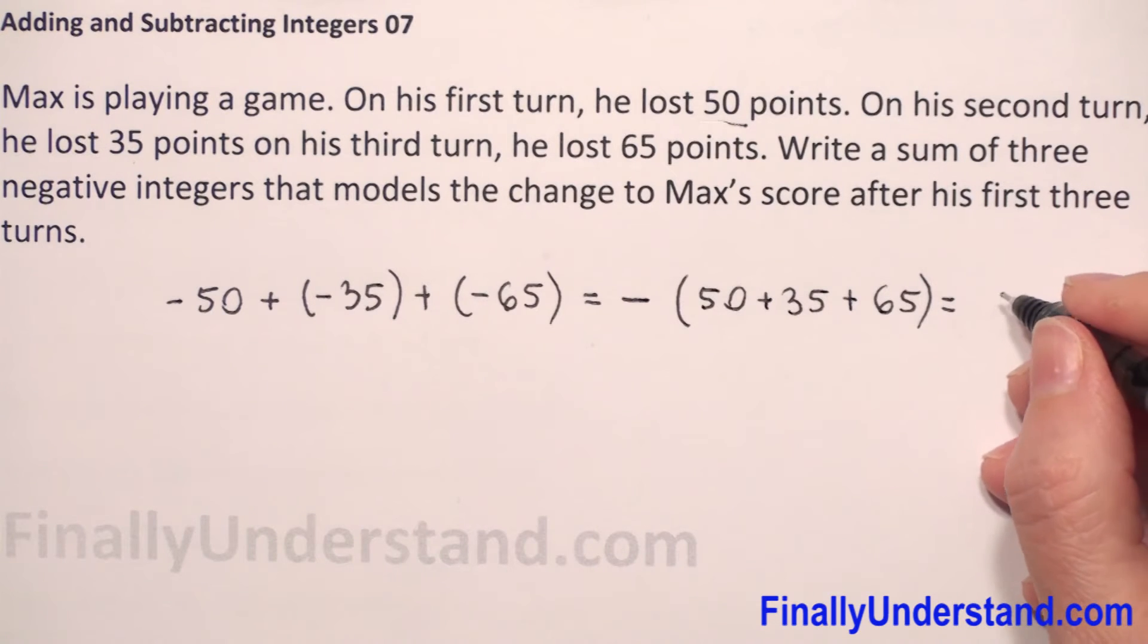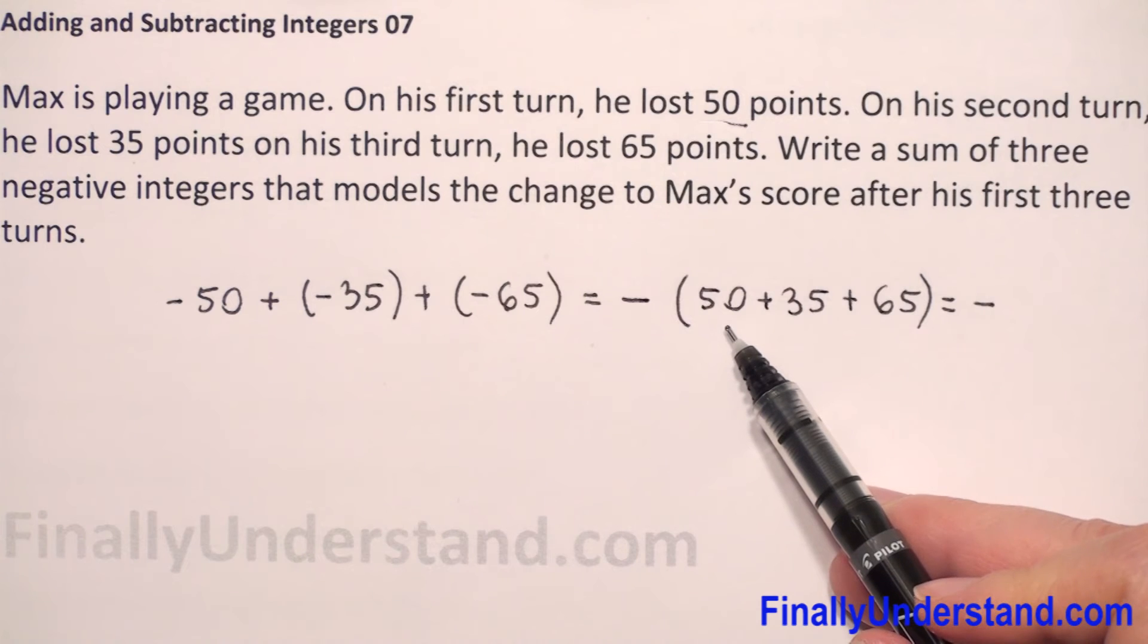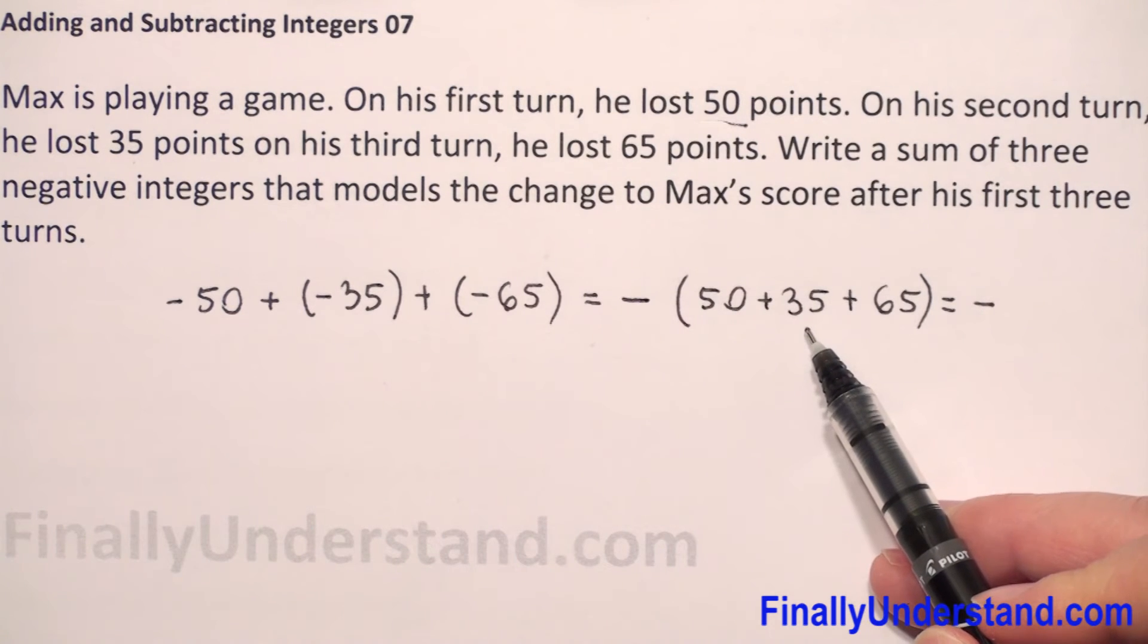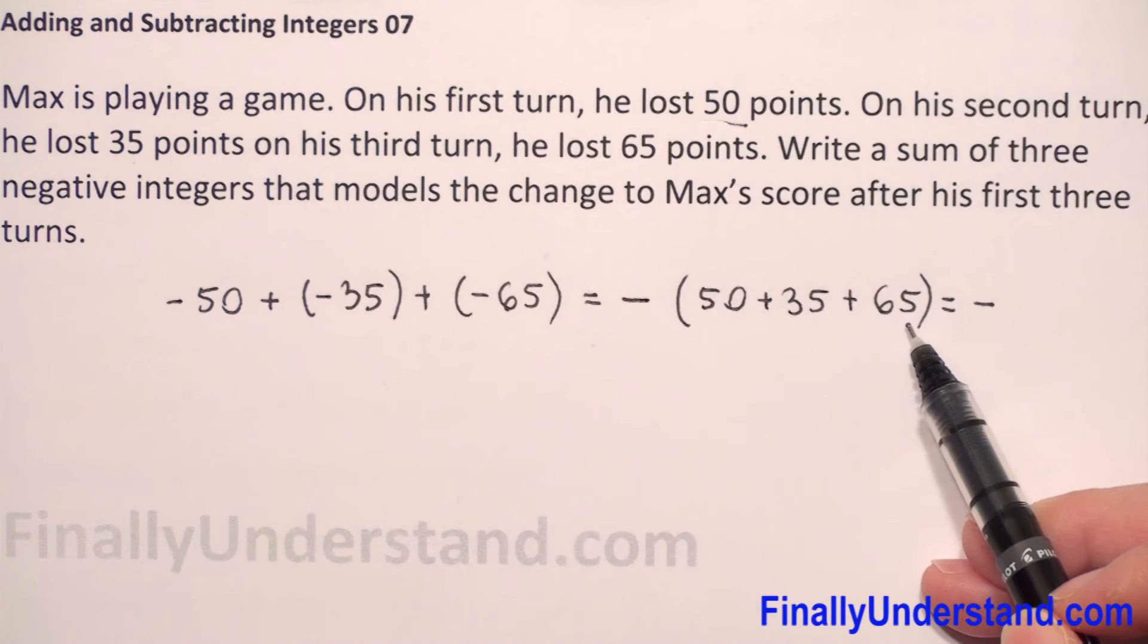So this is equal. Negative sign we have to rewrite. And we have 50 plus 35 is 85 plus 65. So it will be 85 plus 5 is 90 plus 60.